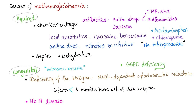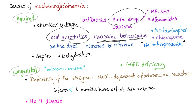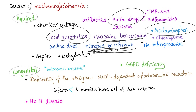Causes of methemoglobinemia — again discussed in the previous video. Acquired: don't forget the sulfa drugs, the local anesthetics such as lidocaine and benzocaine, acetaminophen, and anything with nitro, nitrate, or nitrite in it.